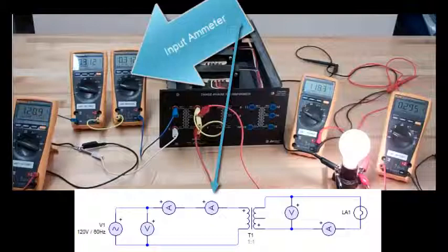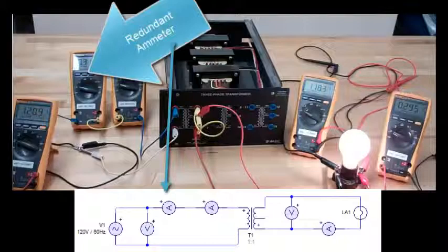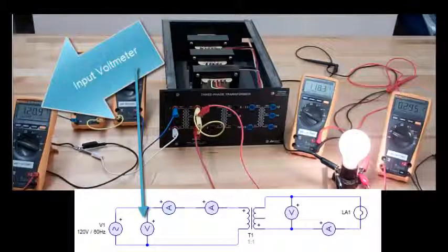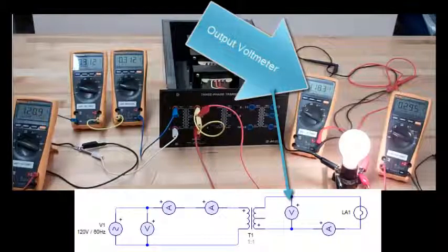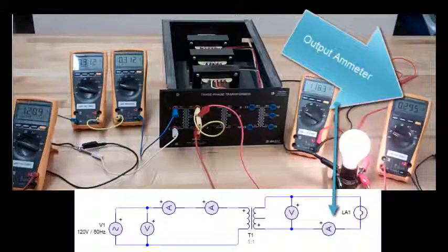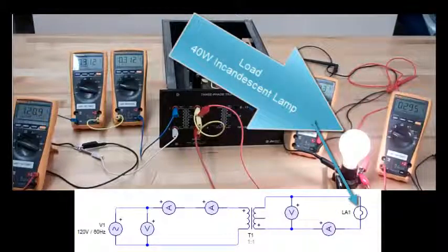It's the input ammeter. A redundant input ammeter. Input voltmeter. Output voltmeter. Output ammeter. And a load. It's a 40 watt incandescent lamp.